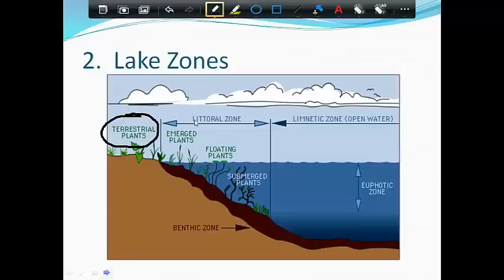The second type that you've drawn are the emerged plants. You can see their roots are in the water and the bottom part of the plant is in the water, but the top parts of the plant stick out. Cattails are a common example of emerged plants.